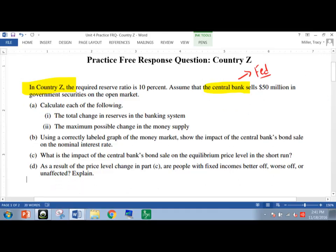The required reserve ratio is 10%. And we're going to assume that the central bank sells $50 million in government securities in the open market. Just a little note, when we sell bonds, we're trying to make the money supply smaller. So that is really important information to think about.